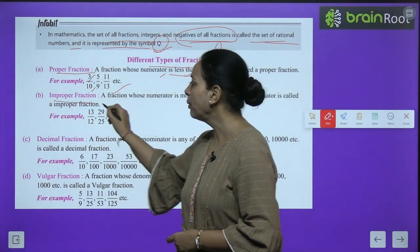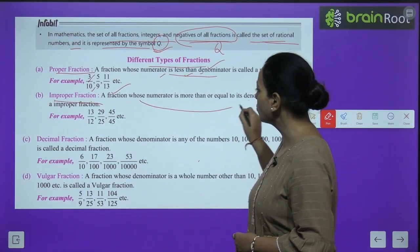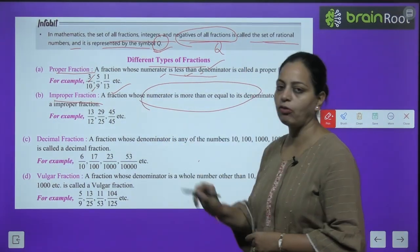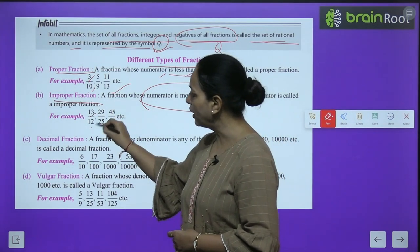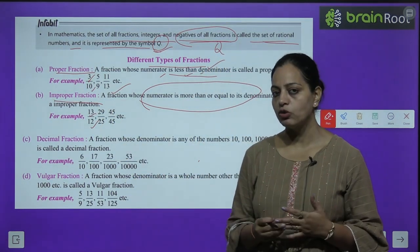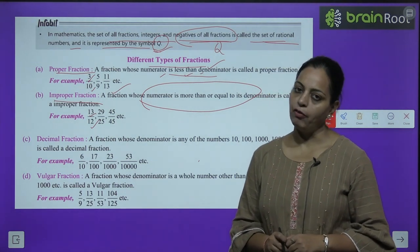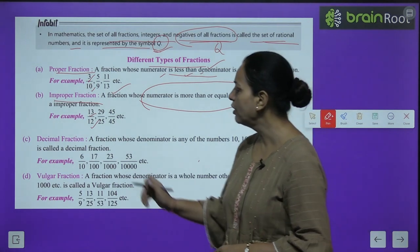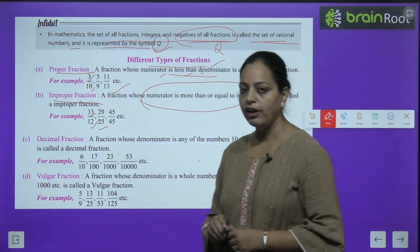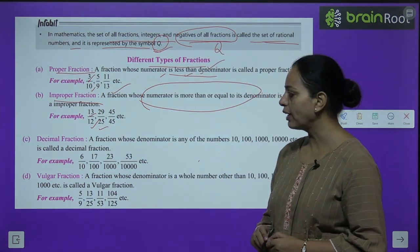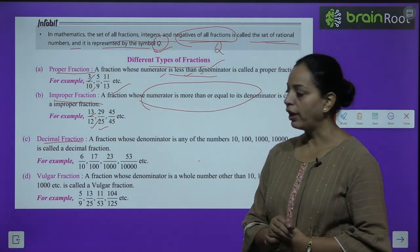Improper fraction: a fraction whose numerator is more than or equal to the denominator. Jab numerator denominator ke barabar ho jaaye ya usse bada ho jaaye, usko hum bolte hain improper fraction. For example: 13/12, 29/25, like this. Now decimal fraction: jab uske denominator mein 10, 100, ya 1000 aajaye — that is a decimal fraction.